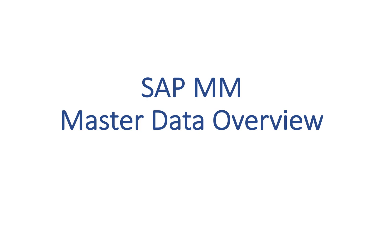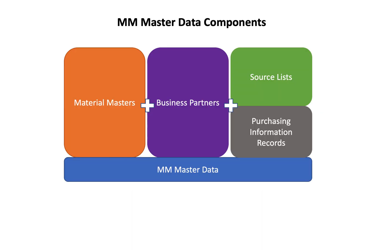In the Materials Management MM module of SAP S4HANA, there are four key components of master data that we heavily rely on: material masters, business partners, source lists, and purchasing information records. The material masters serve as the primary data source for all materials that are procured,